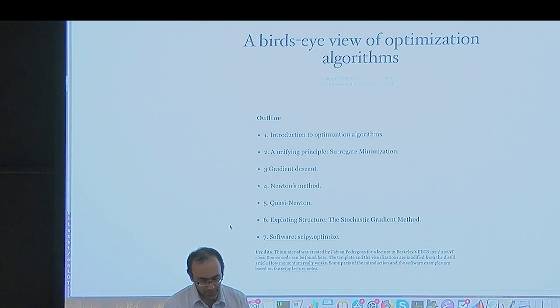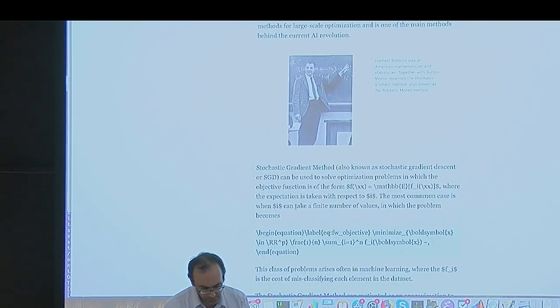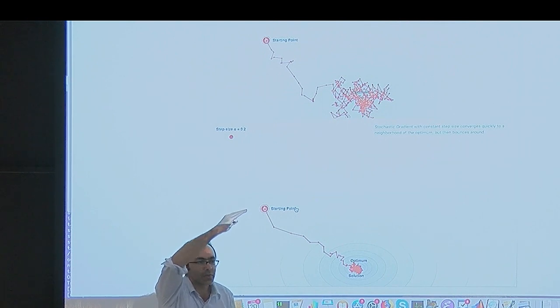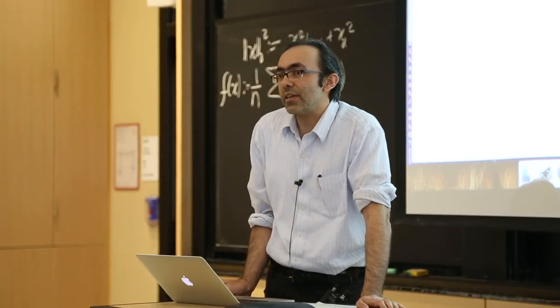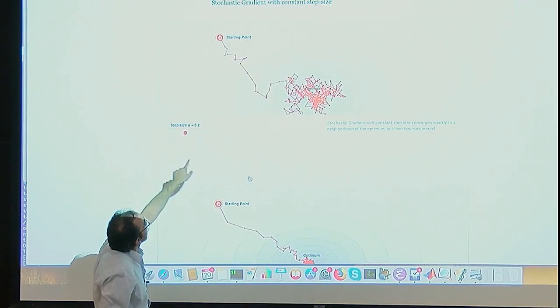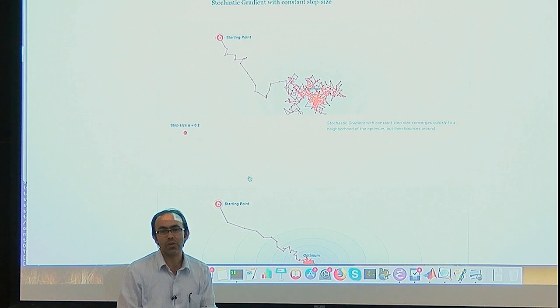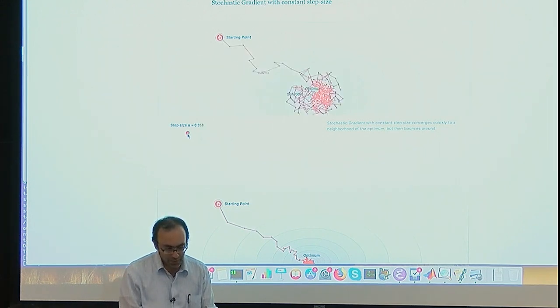Gradient descent, as you pick different step sizes, moves towards the optimum. If the step size is small, you make many small steps and reach there. In a neural network type problem which is non-convex, you typically work with smaller step sizes. In comparison, let's look at stochastic gradient descent.